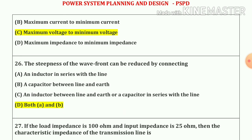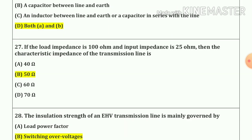Question number 26. The steepness of a wave front can be reduced by connecting: option A — an inductor in series with the line, and option B — a capacitor between the line and earth. Question number 27. If the load impedance is 100 ohm and input impedance is 25 ohm, then the characteristic impedance of the transmission line is 50 ohm.